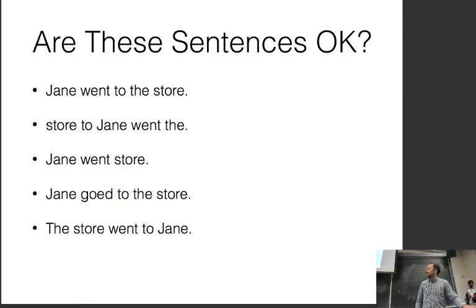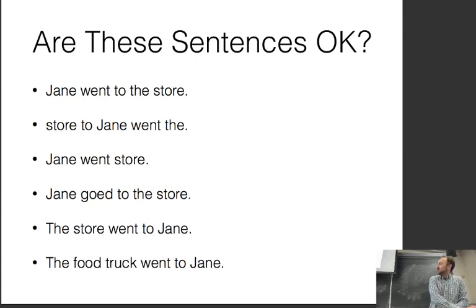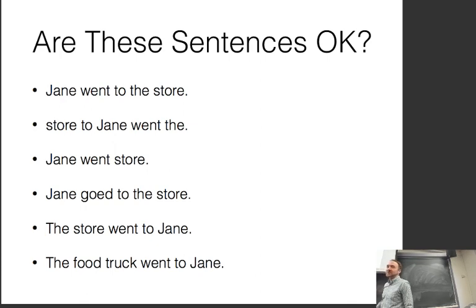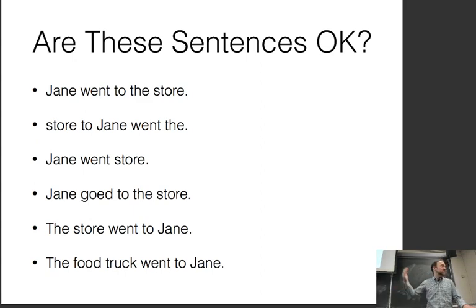What about this one? Conjugated wrong. And what about this one? You can see things are pretty complicated. We start from the obviously wrong ones where things are in the completely wrong order for English, then go on to things where it's conjugated wrong or missing words, then on to things where it's grammatical but semantically incorrect. Then we have exceptions — a food truck kind of is a store, it sells things, but it also has the ability to go, which makes things more complicated.